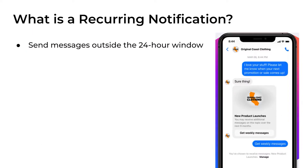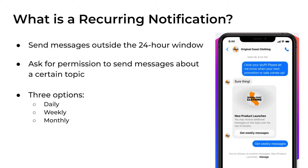So what is a recurring notification? With the recurring notification we can send messages outside the 24-hour window. We need to ask for permission to send messages about a certain topic, and we can send messages on a recurring schedule — daily, weekly, or even monthly. Before we had the one-time notification, which allowed only one message, but now we can send on an ongoing basis.